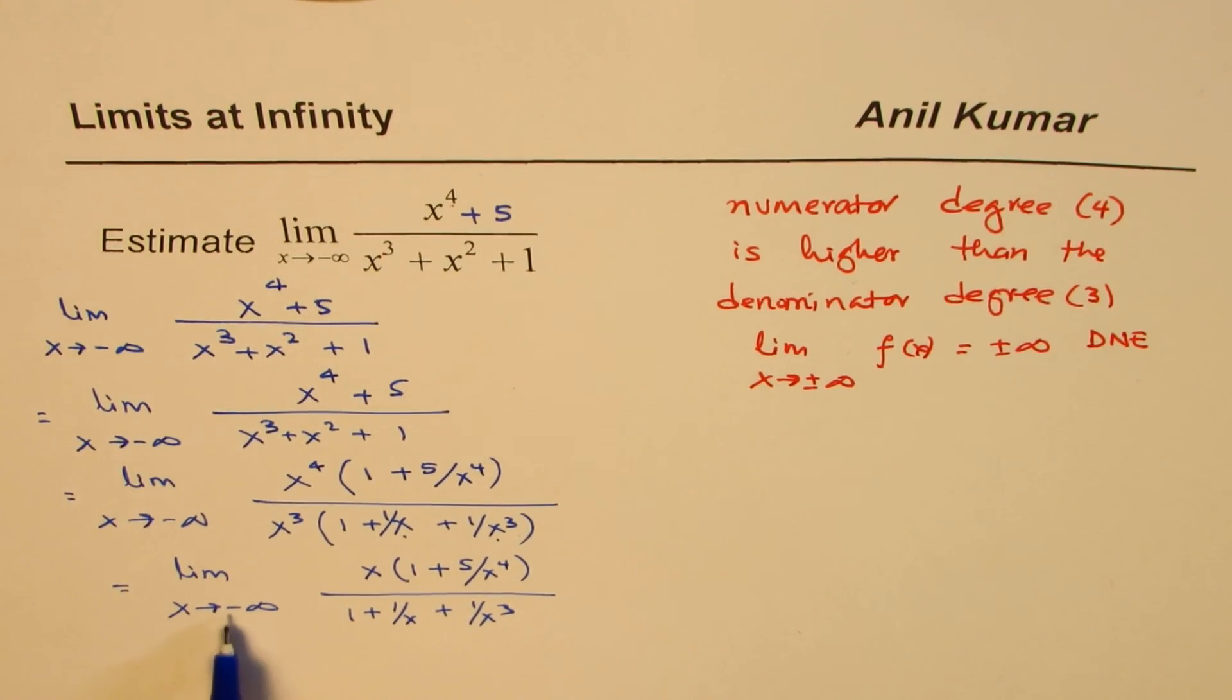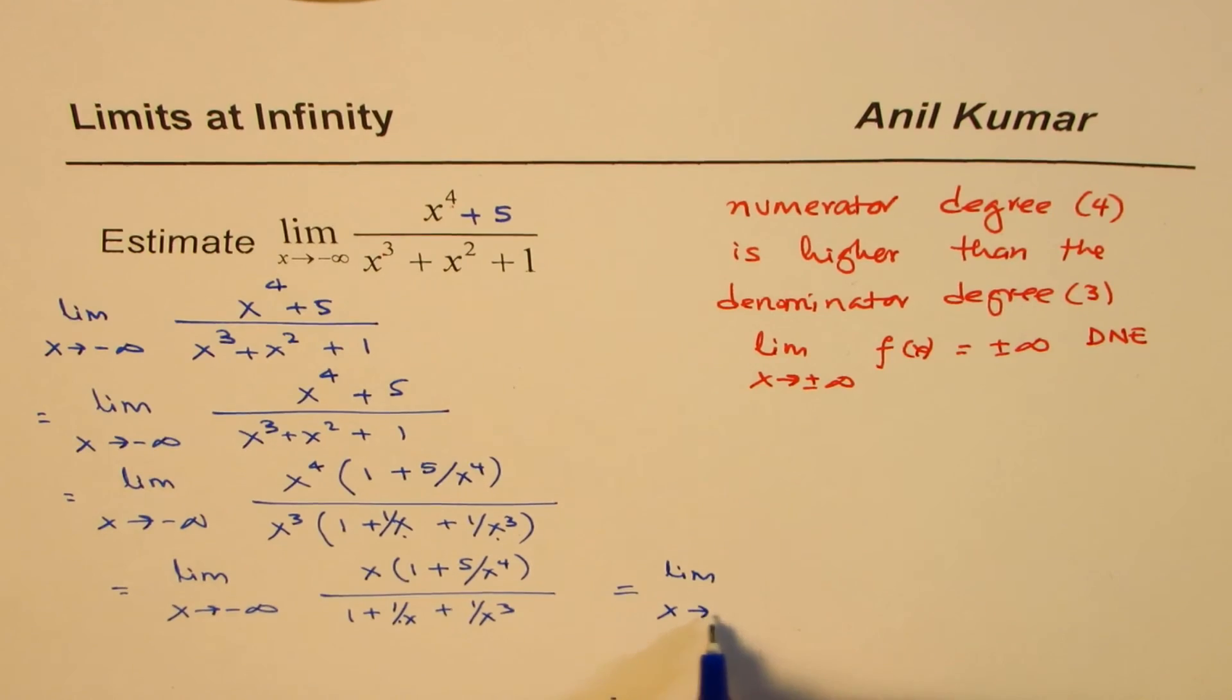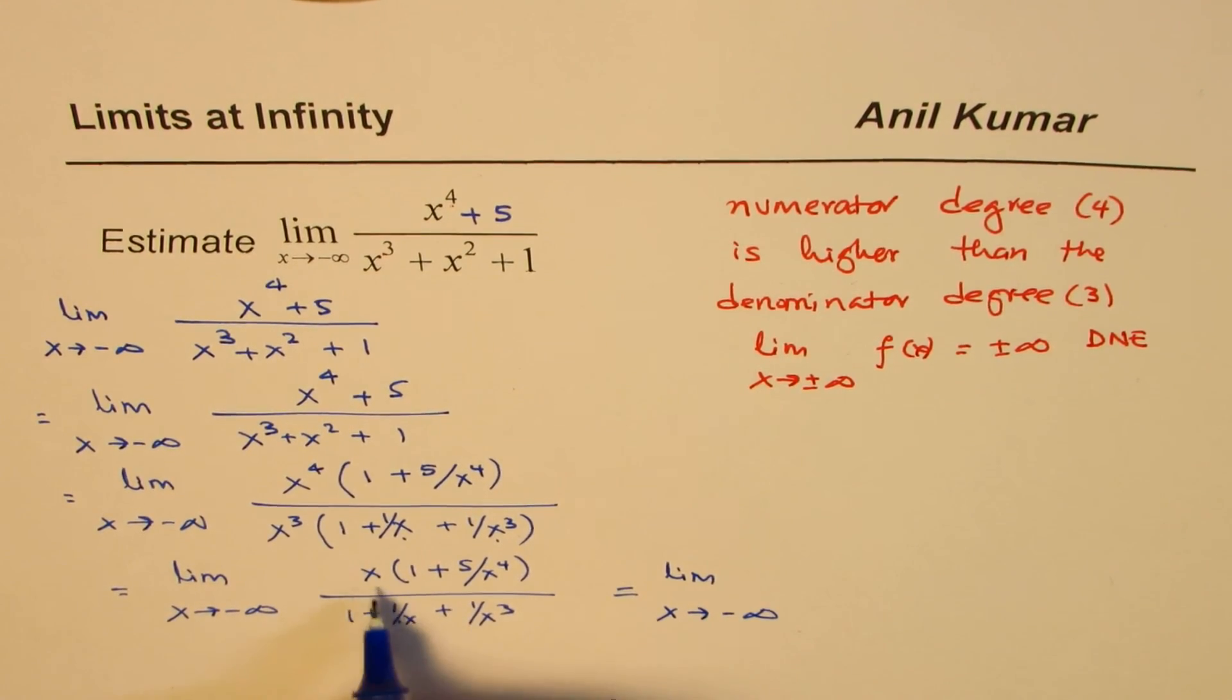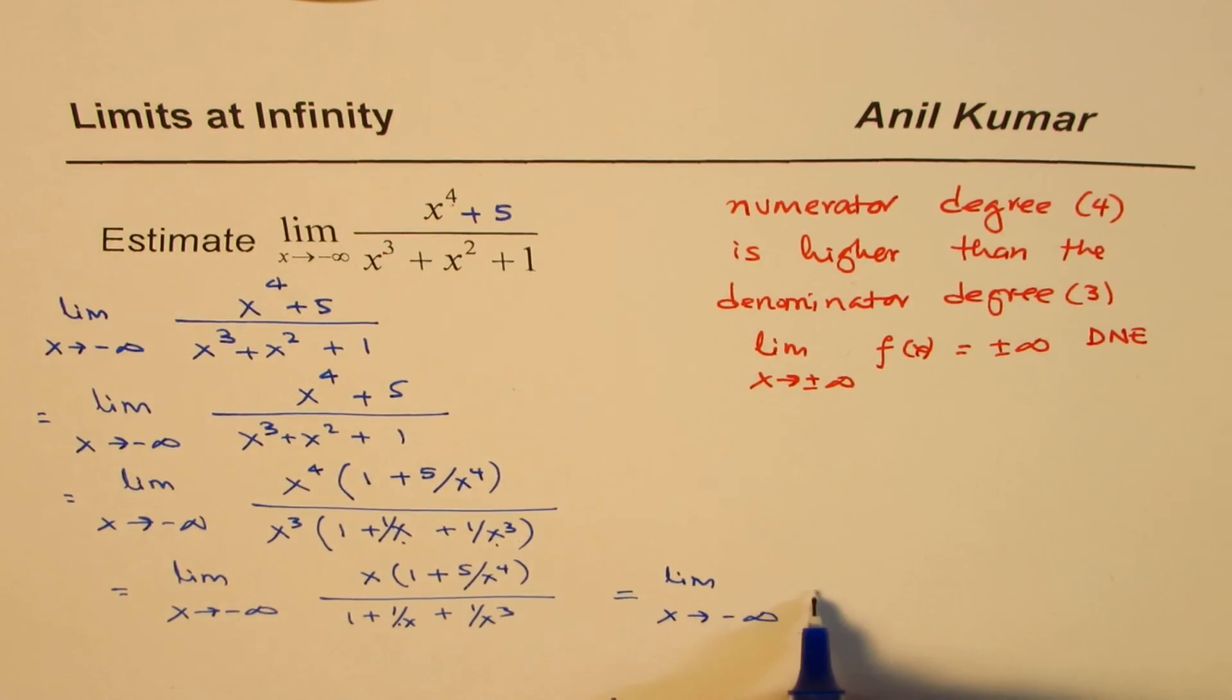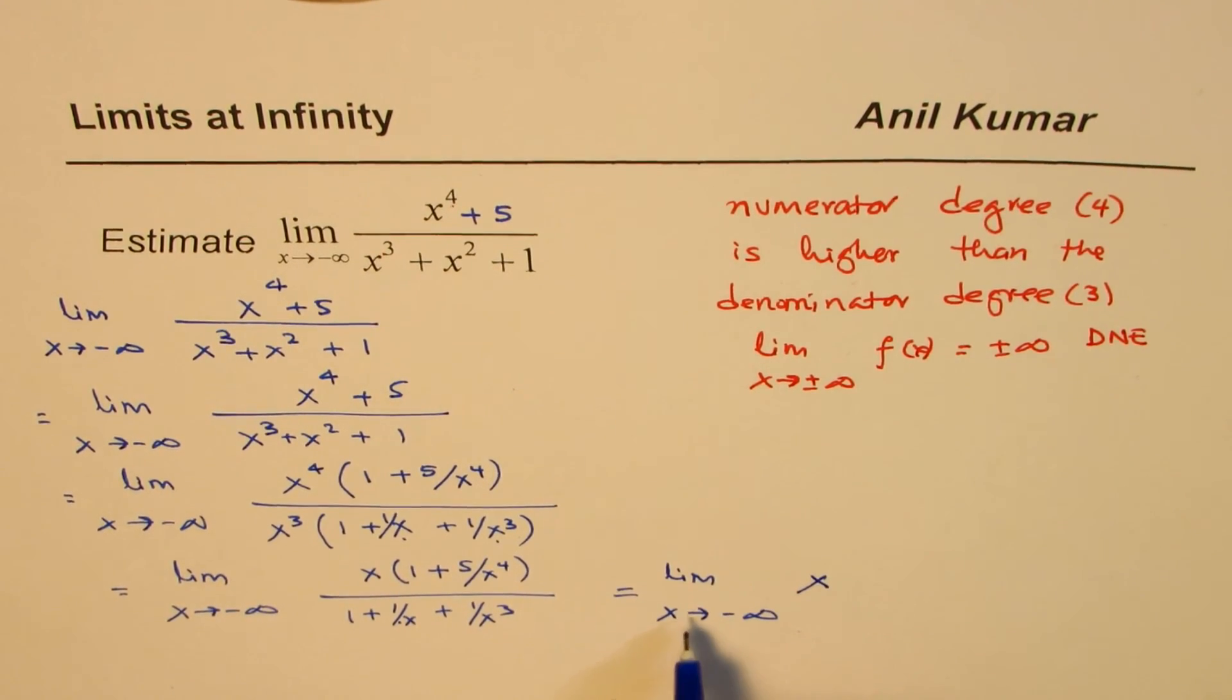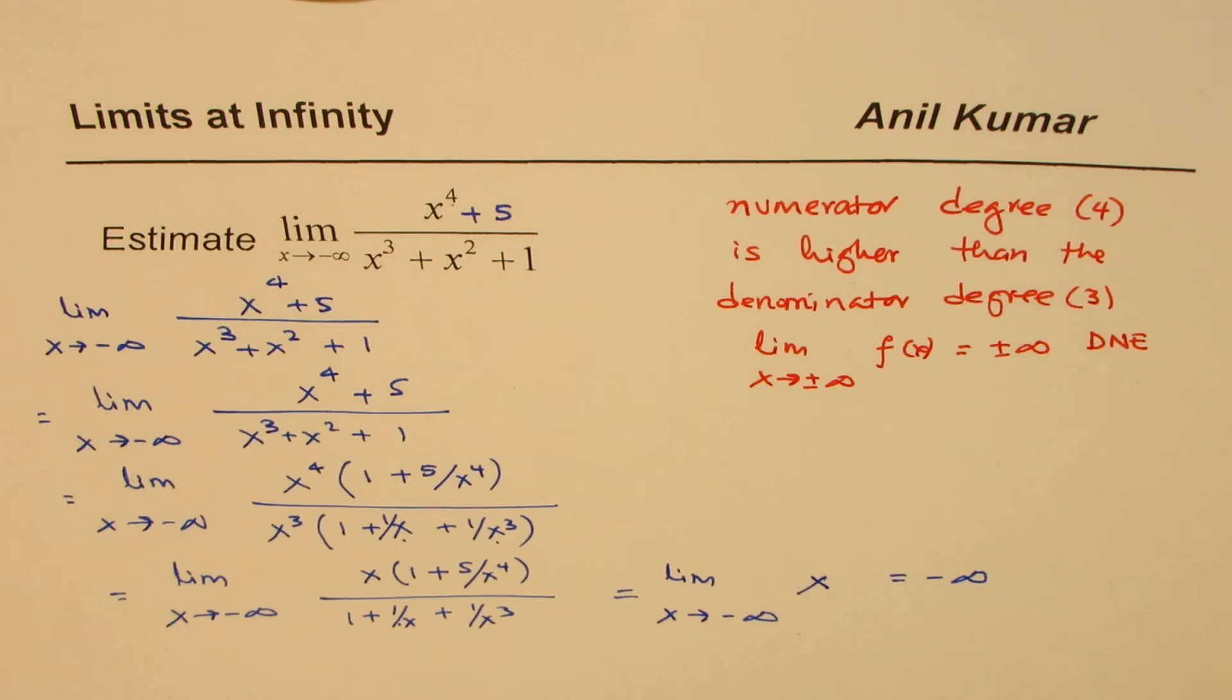Now, if x is approaching negative infinity, this is 0, this is 0, this is 0. So what do you get? You get actually limit. We are saying x is approaching negative infinity. And these things are 0, these things are approaching 0. So you basically get x. So negative infinity means it is approaching negative infinity. Do you see that? So the value of the function does not approach any real value. So in this case...